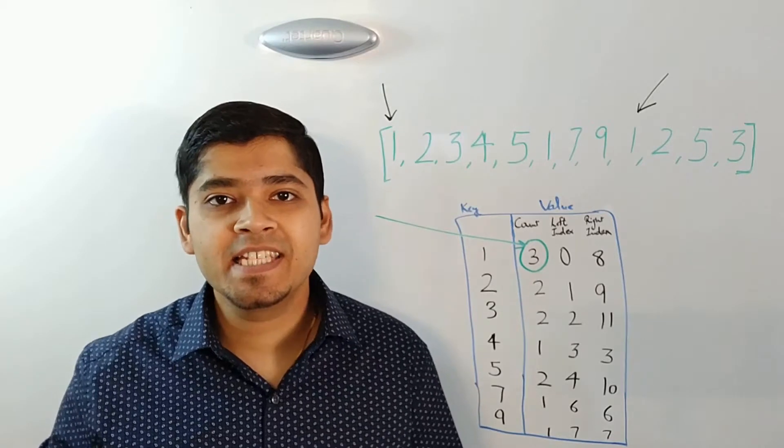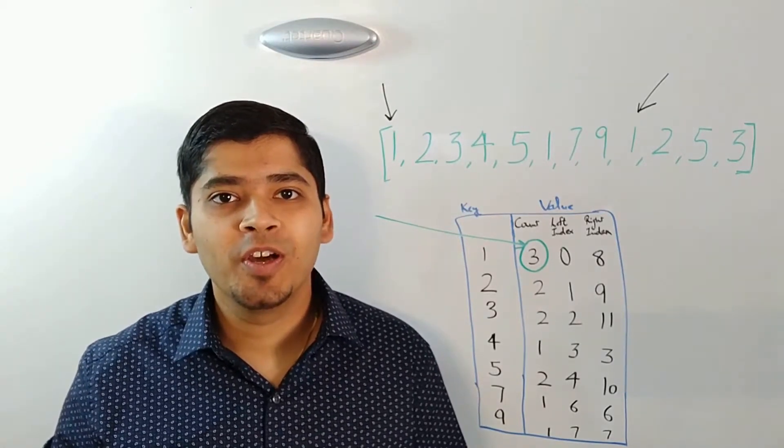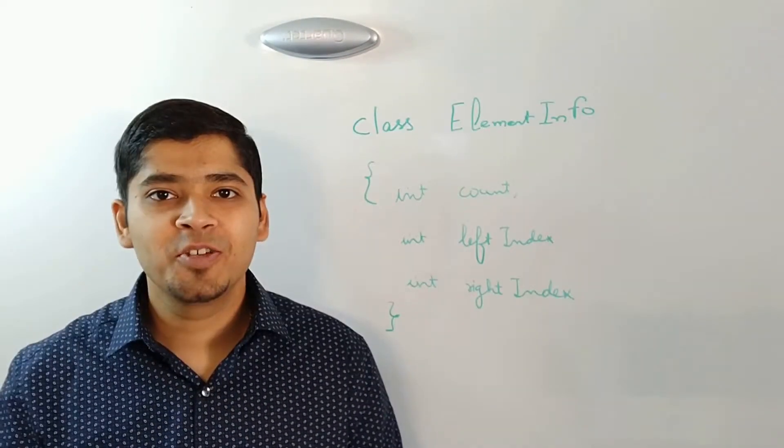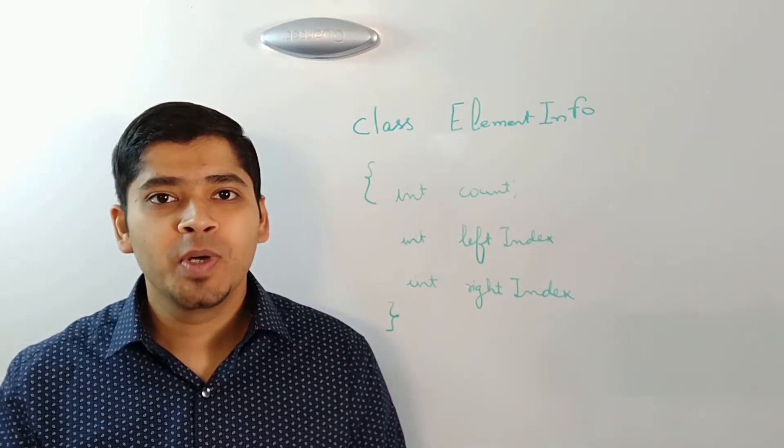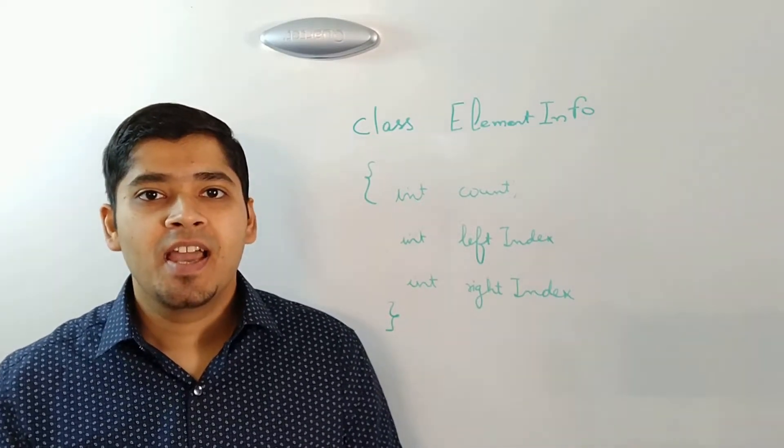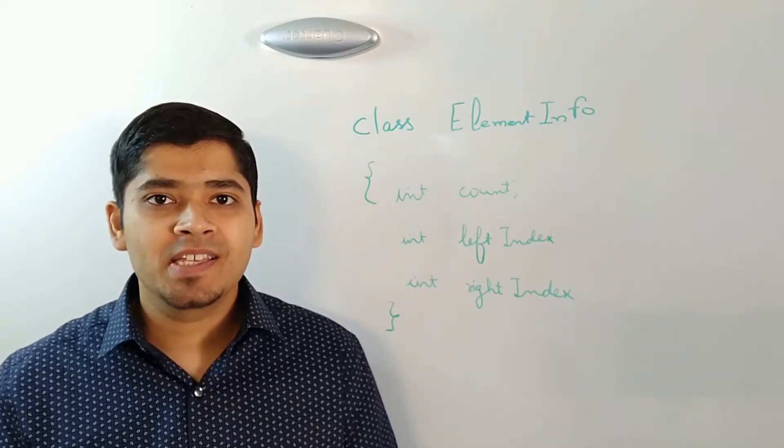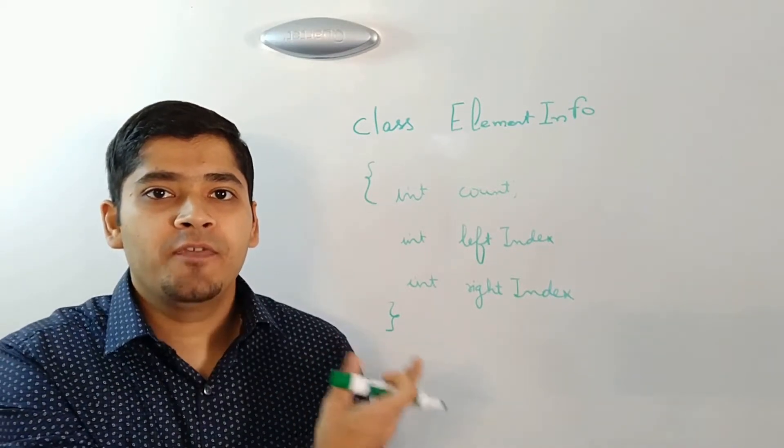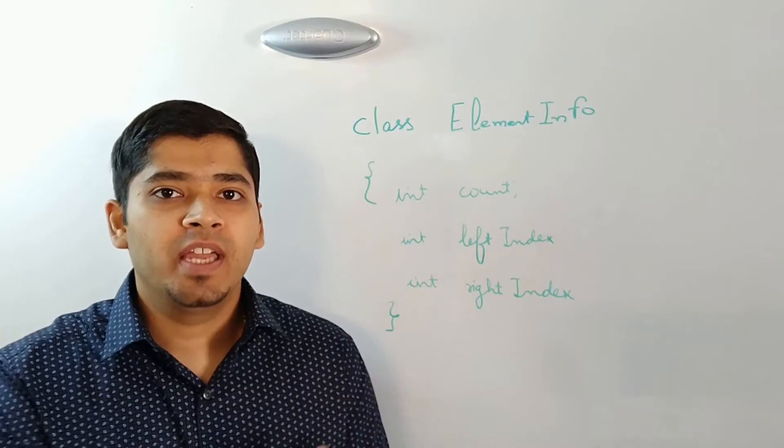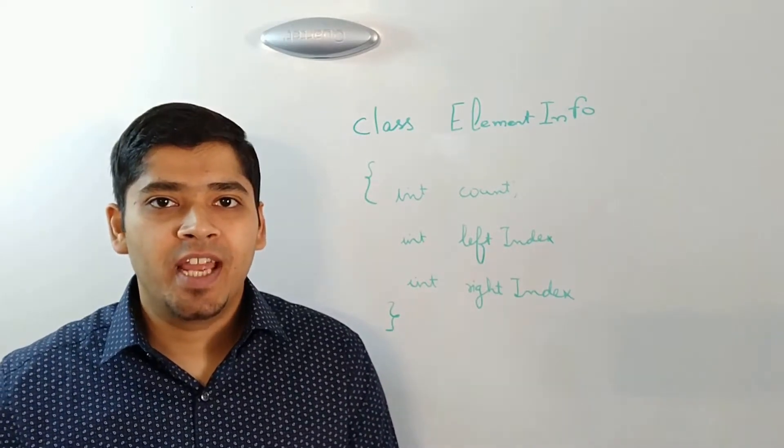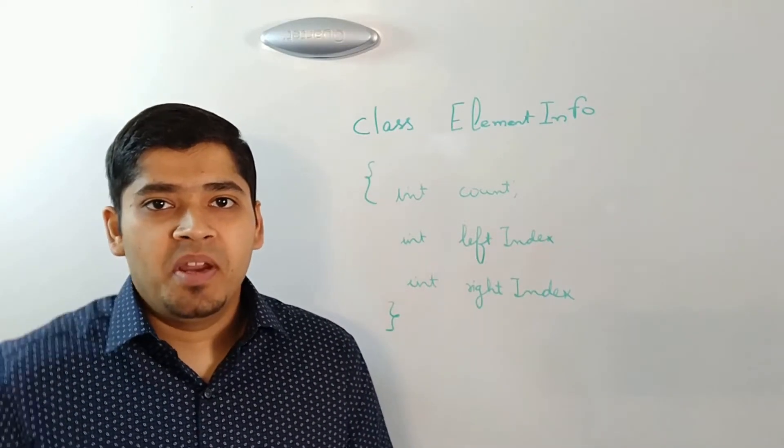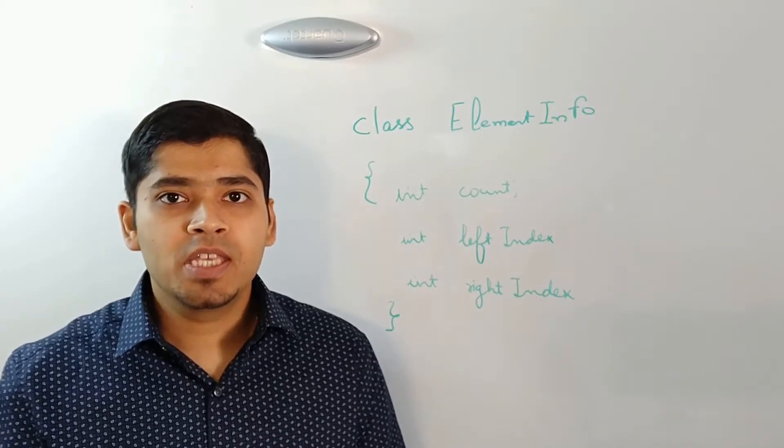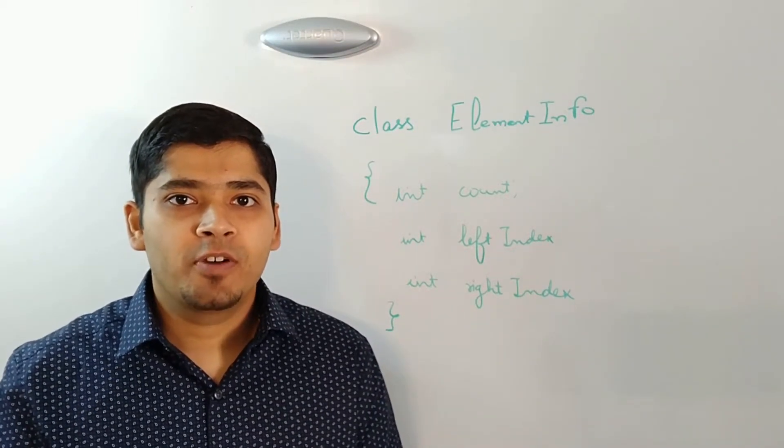Next let's take a look at the pseudocode for this solution. To begin with, since my hash table value contains three things, I would like to create a small class where I can define the integer count, the int left index and the int right index. I'm gonna name it as element info. This will act as the value for my hash map.